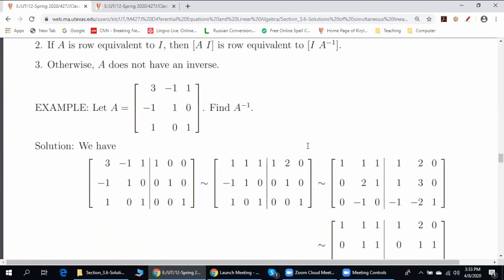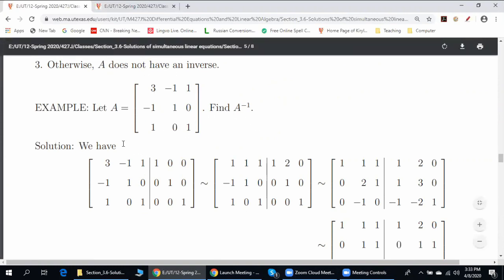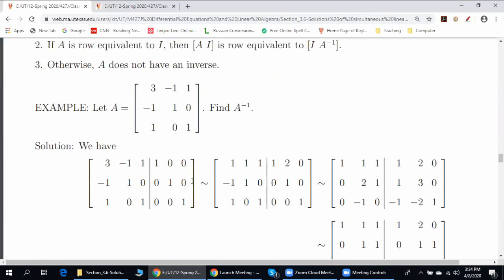Method number one, step one, we create a new matrix. We put together given matrix A, which is over here, and the identity matrix of the same size. In other words, we create a new matrix of the form A, I.